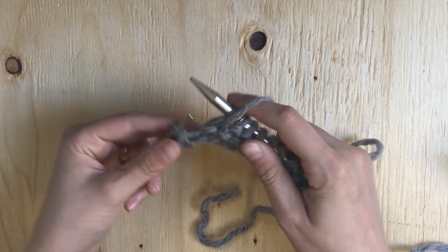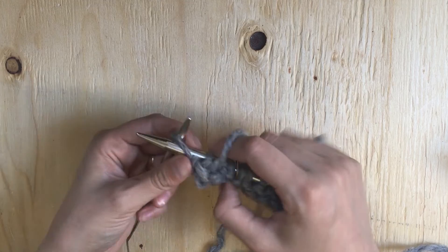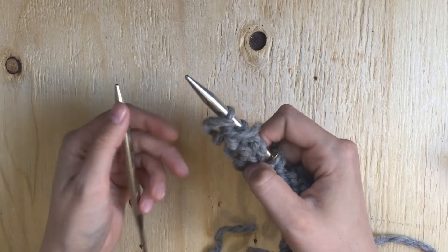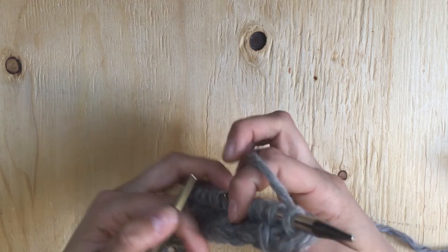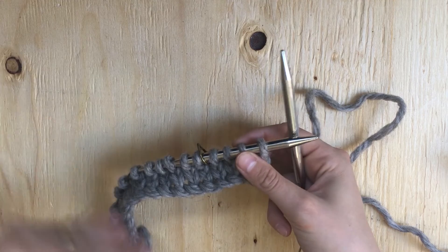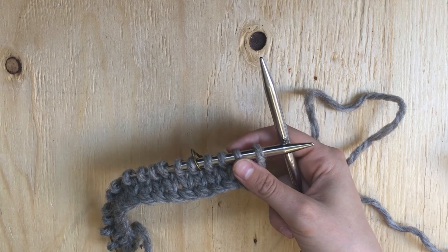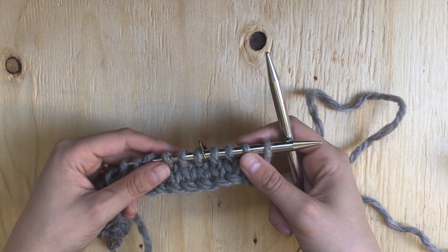That's called slipping a marker and some patterns will, depending on the pattern, it may say to slip the marker. A lot of the time it won't. It's just when you come to it, you slip it. Especially if it's at the beginning or end of a round. If you're working in the round, it's always just going to be there.